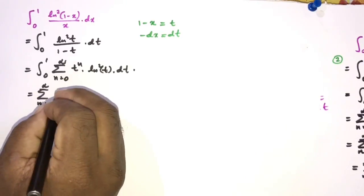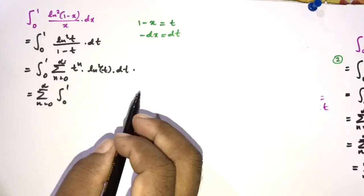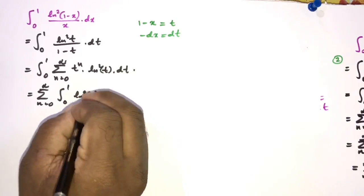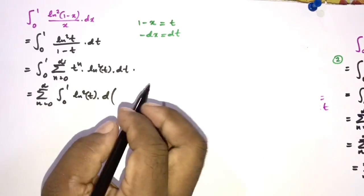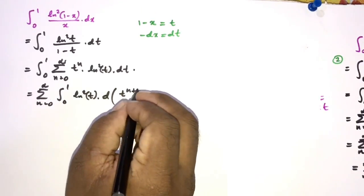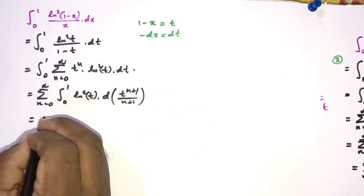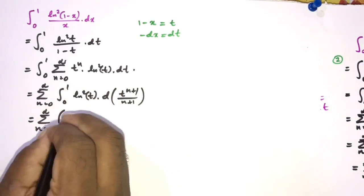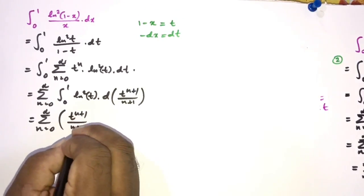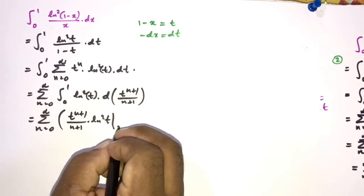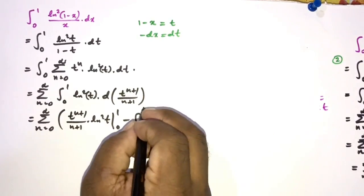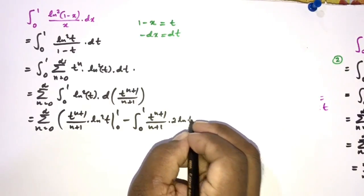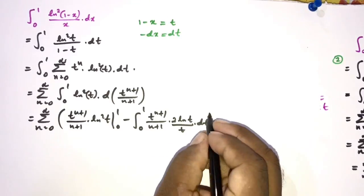Switching the sum and integral, for each term I apply integration by parts. Taking ln²(t) as the first function and tⁿ as the second, integrating tⁿ gives t^(n+1)/(n+1). The boundary term t^(n+1)/(n+1) · ln²(t) evaluated from 0 to 1 is zero. The remaining integral is -∫₀¹ t^(n+1)/(n+1) · (2 ln(t)/t) dt.